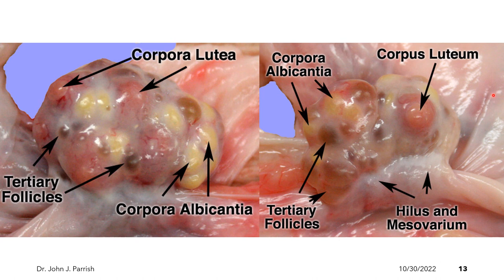Another difference is the orientation of the follicles and the corpora lutea. In the pig, these structures sit very much on the surface of the ovary. In the cow, most of the structures are buried within the ovary. This means that the follicles and the CL are more prominent and more conspicuous in the pig ovary than in the cow's ovary.